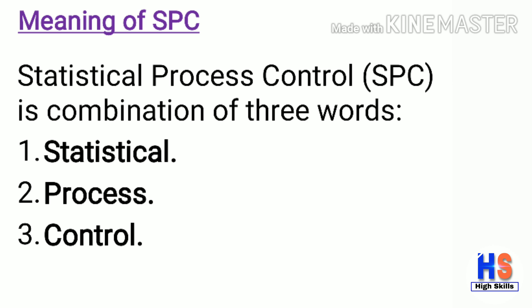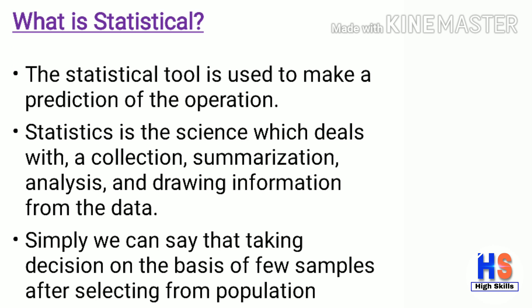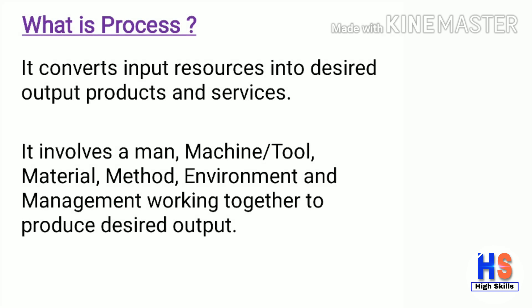Statistical Process Control is a combination of three words: Statistical, Process, and Control. First, what is 'Statistical'? The statistical tool is used to make predictions about operations. Statistics is the science that deals with collection, summarization, analysis, and drawing information from data. Simply put, it means taking decisions on the basis of a few samples selected from a population.